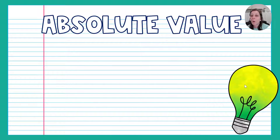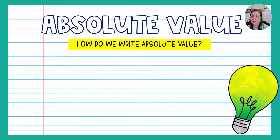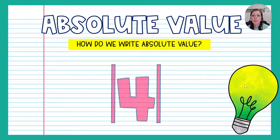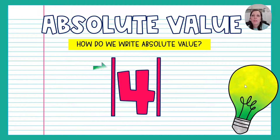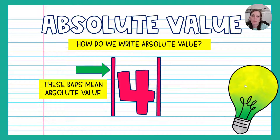So we know what absolute value is — how do we write absolute value? It looks a little something like this. These two bars on either side of the four, those bars mean absolute value. So if you ever see a number written in those bars, that's just asking you what the absolute value of that number is.